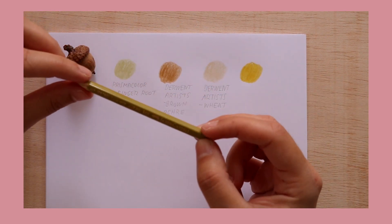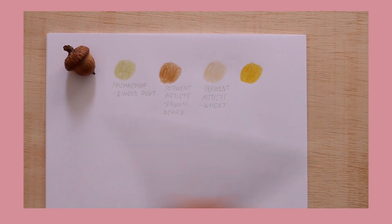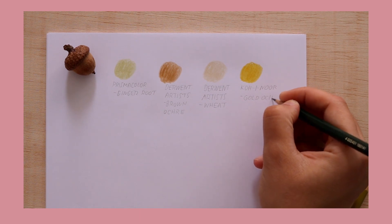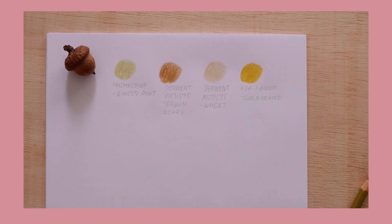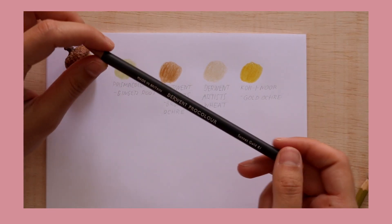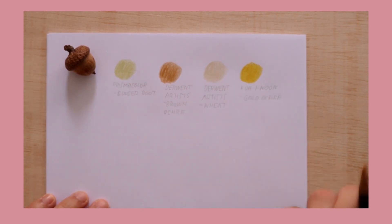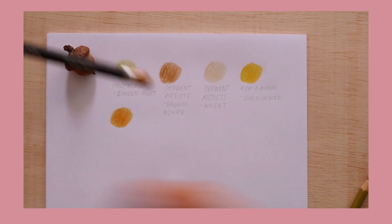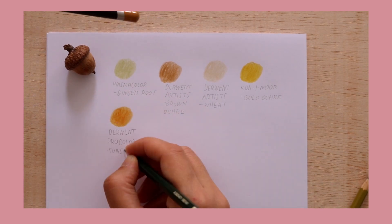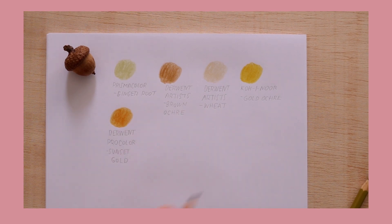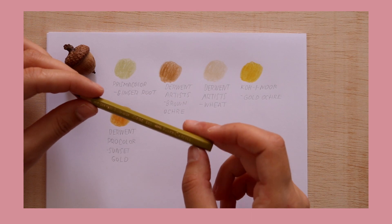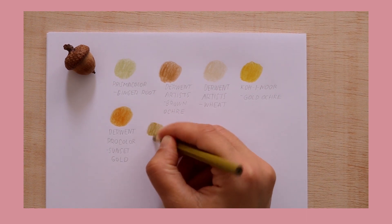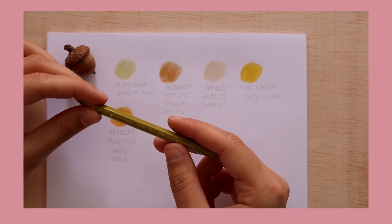Then we have Bronze Yellow. Oh, I forgot to write this one down, excuse me. Then we have Sunset Gold by Derwent Pro Color. Then, Bronze Yellow by Faber-Castell. A beautiful greenish yellow.